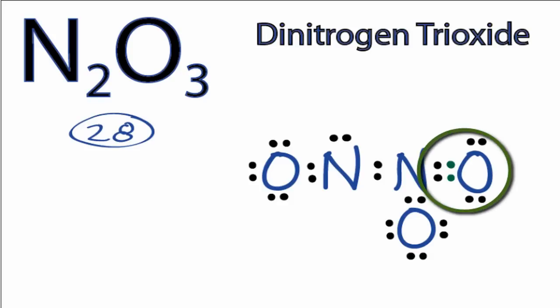The oxygen still has 8 valence electrons, but now the nitrogen has 8 valence electrons as well. So we'll do the same thing on the other side.